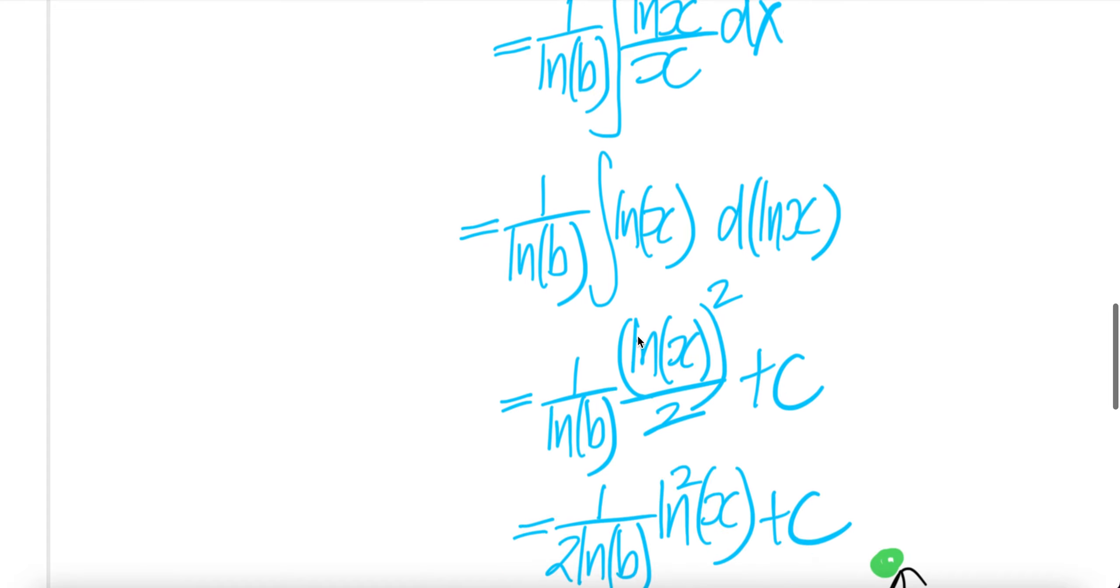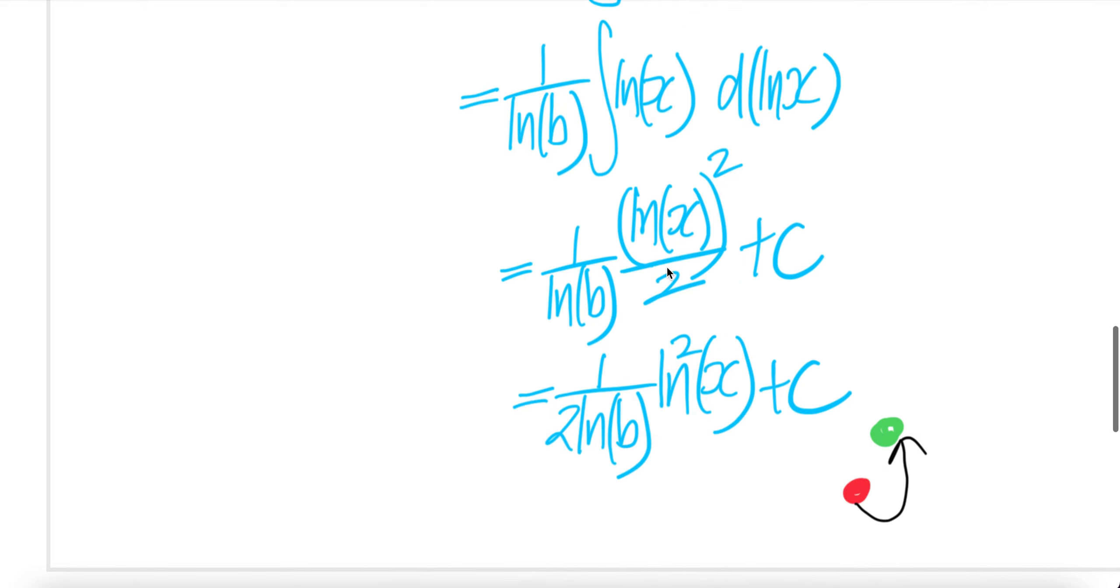Now the integral of this is—there's a 1 here—1 plus 1 over 1 plus 1, which is 2 over 2. And then here will be 1 over 2 times ln b, ln x whole thing squared, plus C. Done.